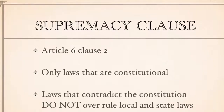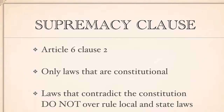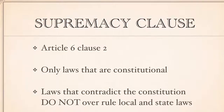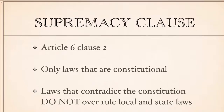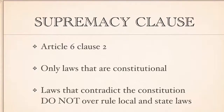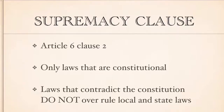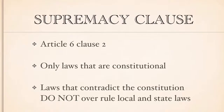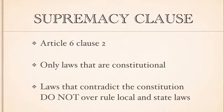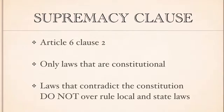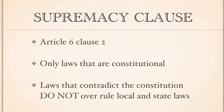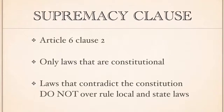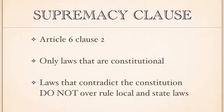Next, we look at the Supremacy Clause, which says: 'This Constitution and the laws of the United States which shall be made in pursuance thereof shall be the supreme law of the land.' It is often argued that when local or state laws contradict federal laws, federal laws — because of the Supremacy Clause found in Article 6, Clause 2 — overrule local and state laws. This is true only when the laws created by Congress are constitutional, meaning made in pursuance of the Constitution. Federal laws that contradict the Constitution do not overrule local and state laws.